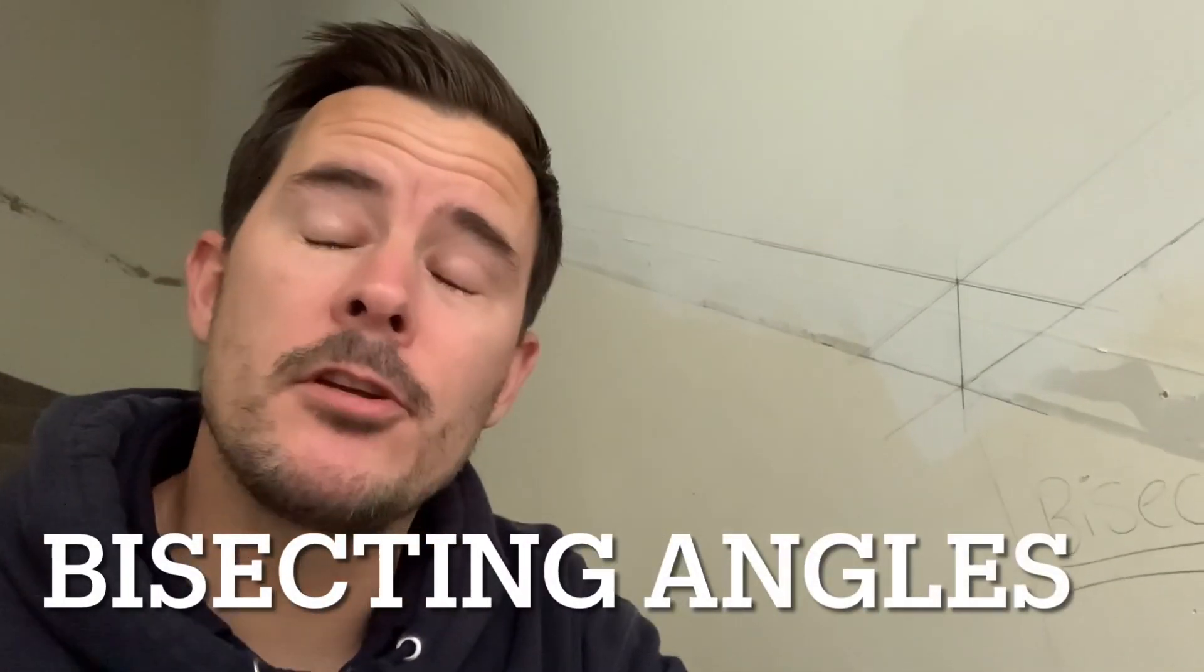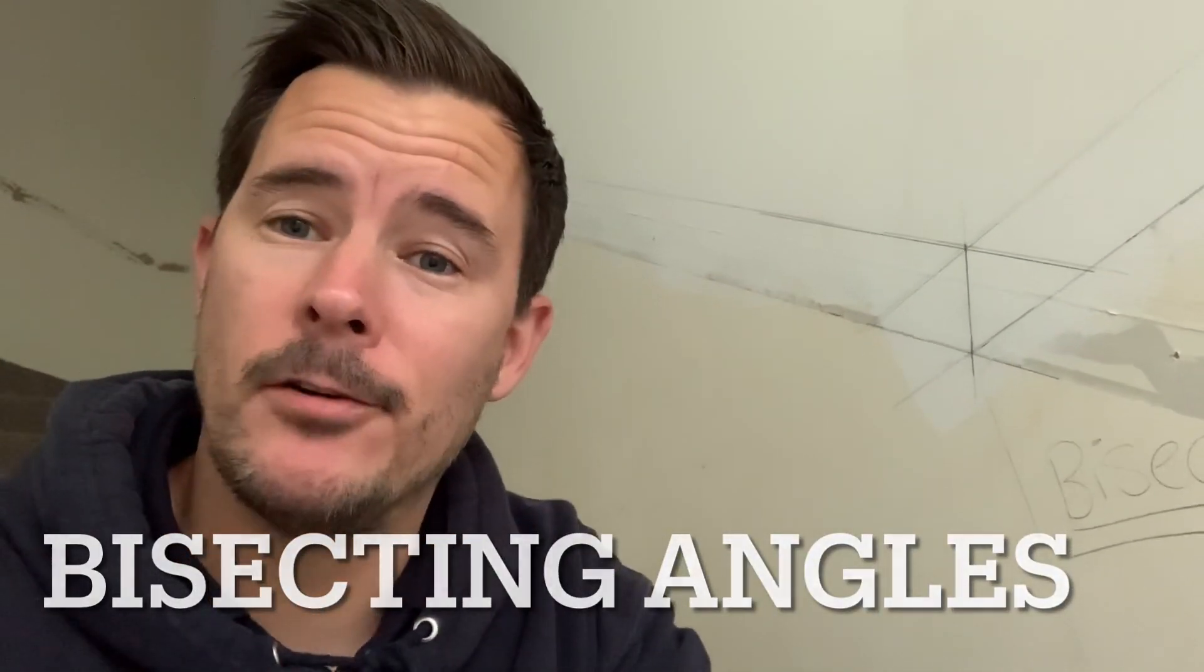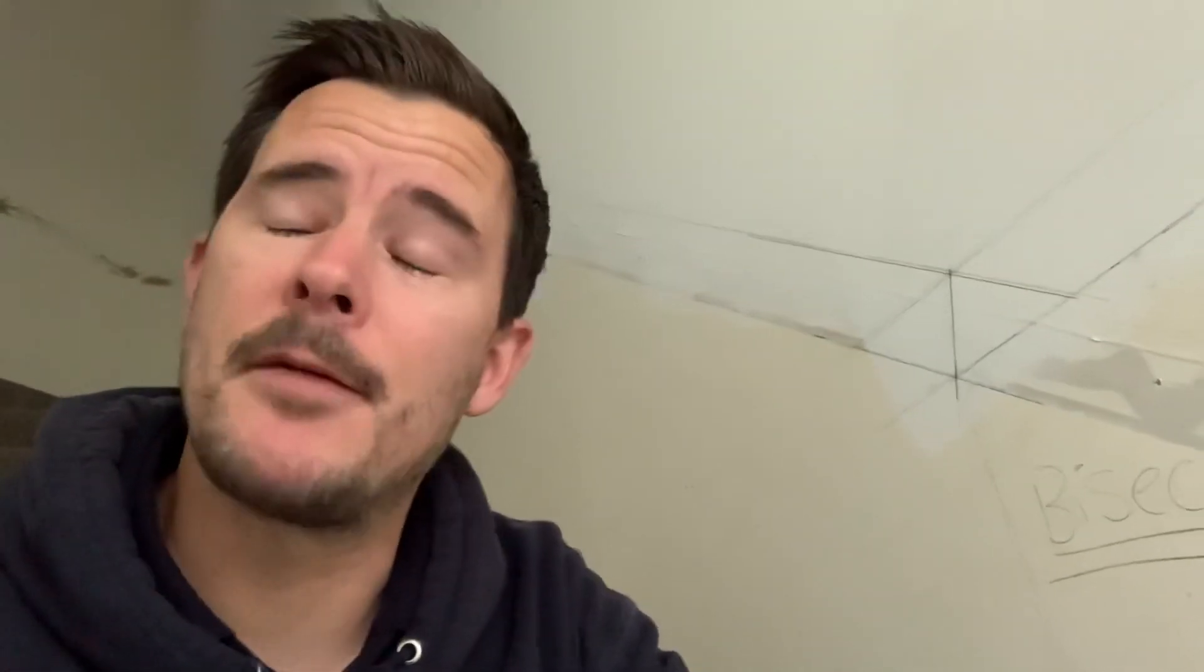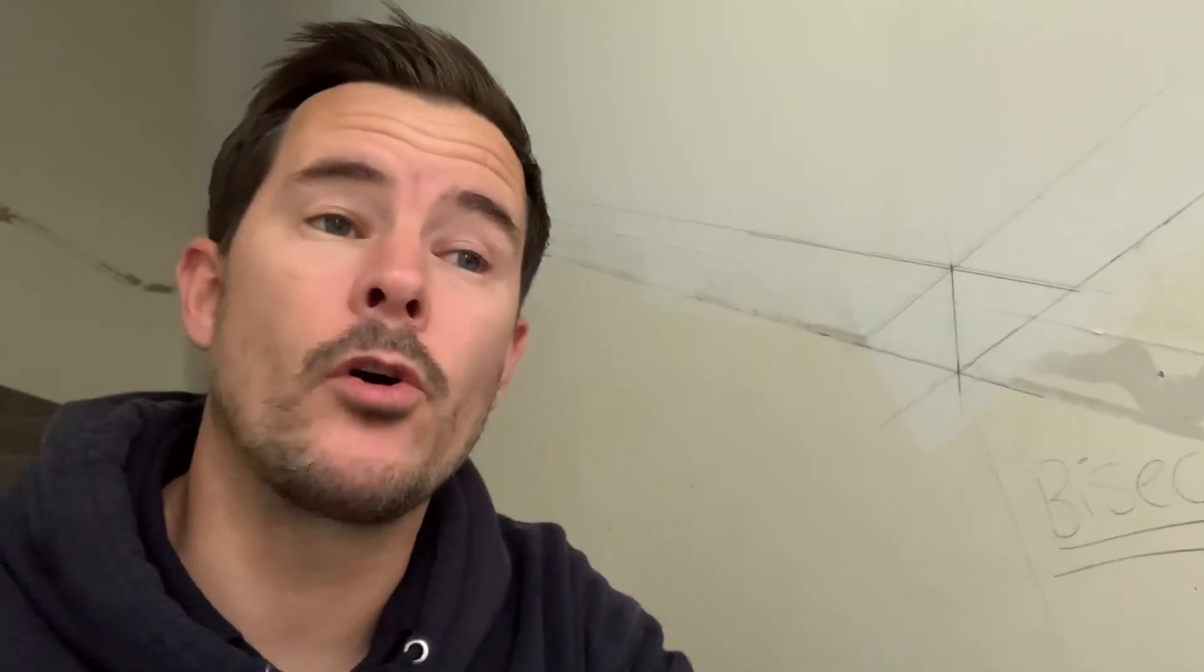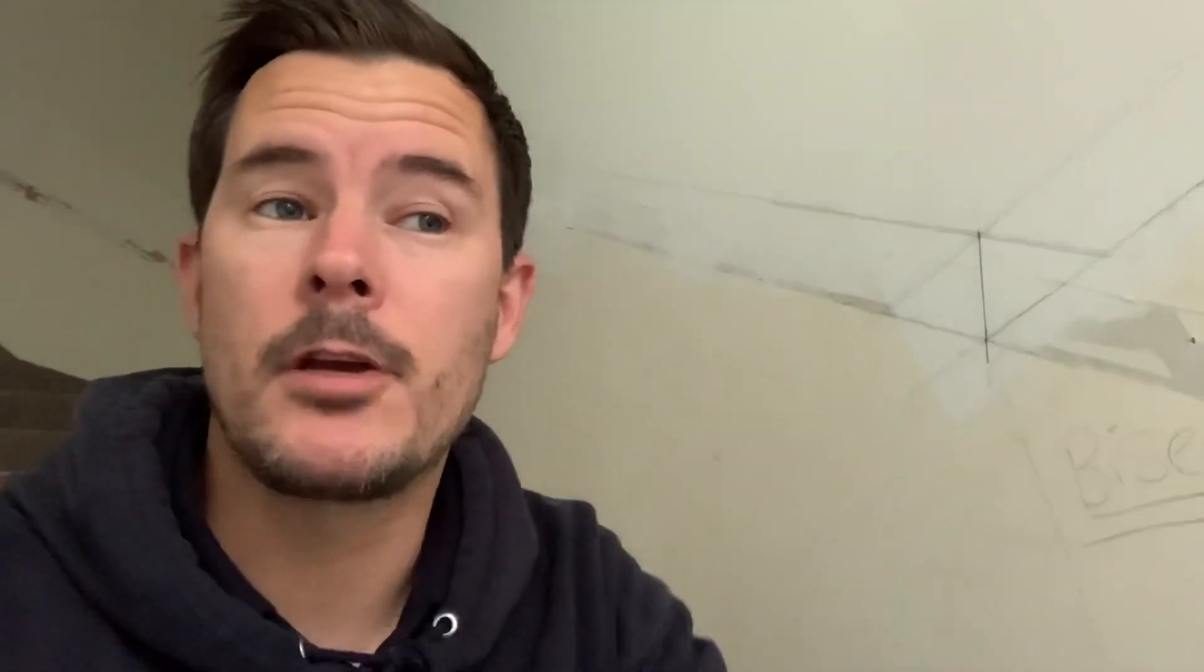You alright? I'm going to show you how to bisect an angle. So say for example we've not got a true 45 degree angle to cut, so you can't just set the chop saw to 45 degrees.